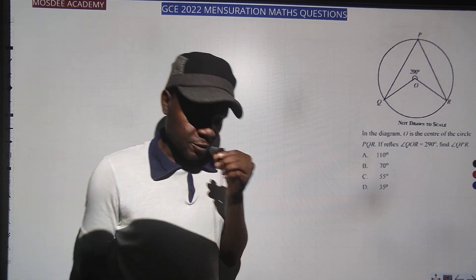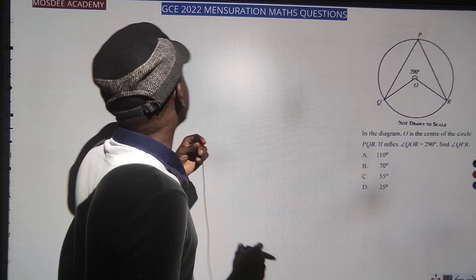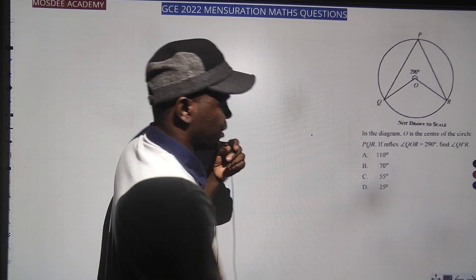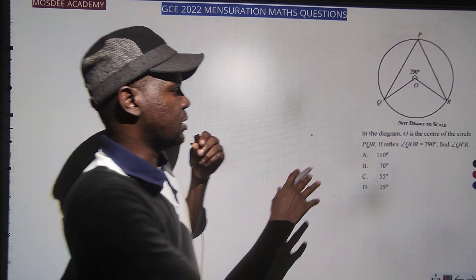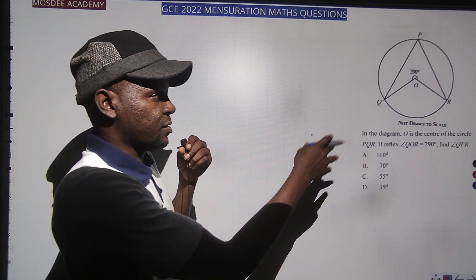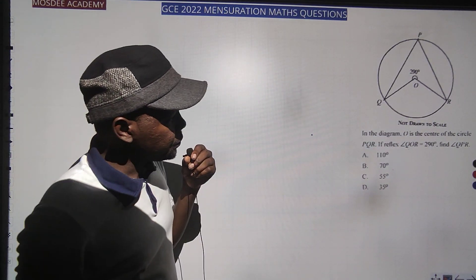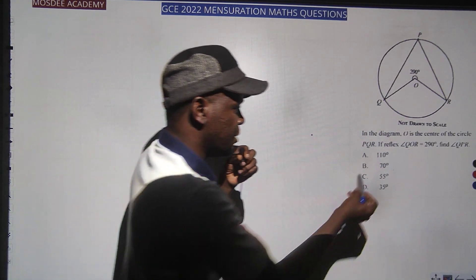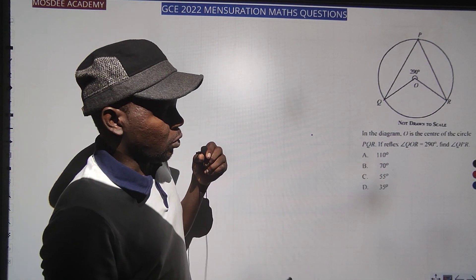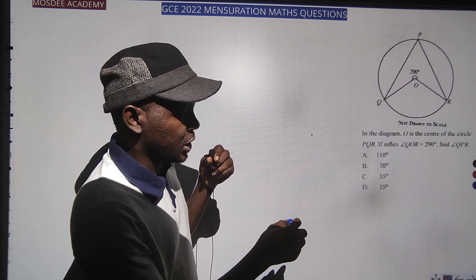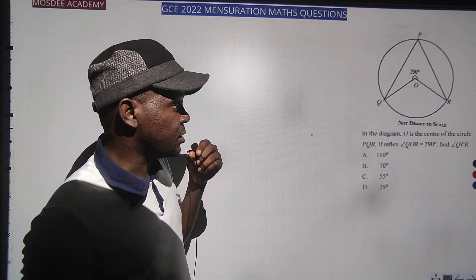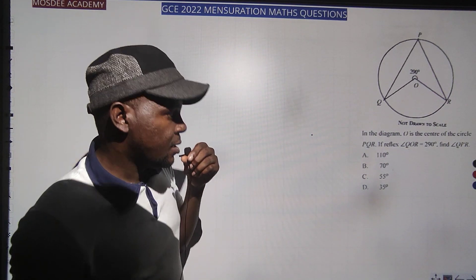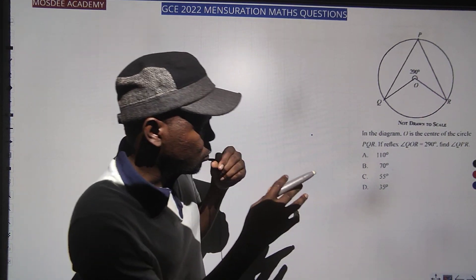So let's see how we're going to solve these questions. The first question: in the diagram, O is the center of circle PQR. The reflex angle QOR is 290°. This is a reflex angle — you can see that sign right there. Find the measure of angle QPR.